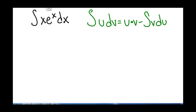So we need to determine what part of this is the u and what part is the dv. For u, we're looking for something that is easy to differentiate. For dv, we want something easy to integrate.